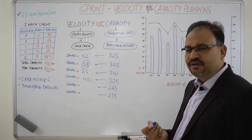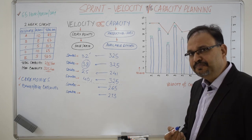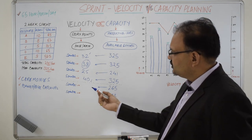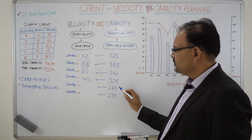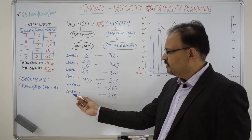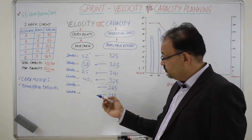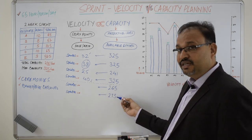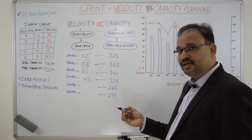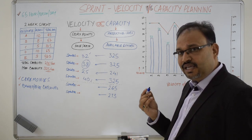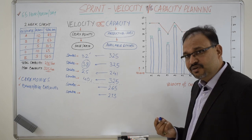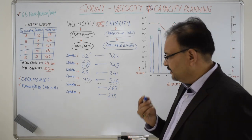For example for sprint 5 we know the capacity is 265. For sprint 6 we know the capacity is 273. We can easily calculate the velocity of the team and keep the client apprised on it so that there are no surprises. Let's see.